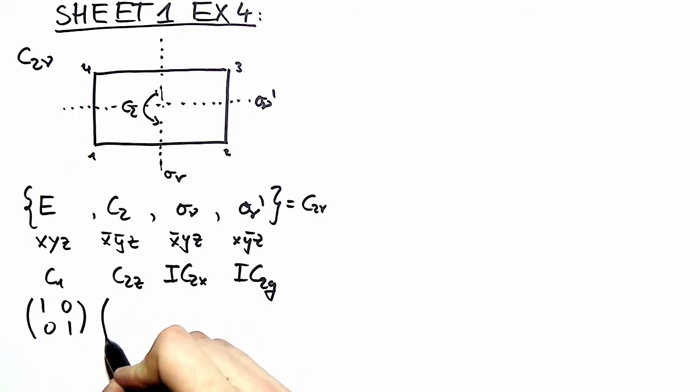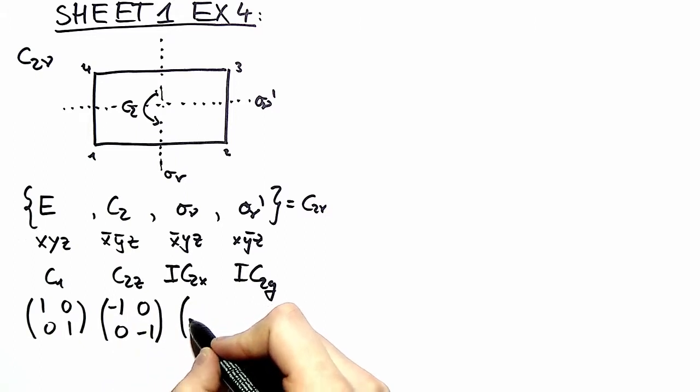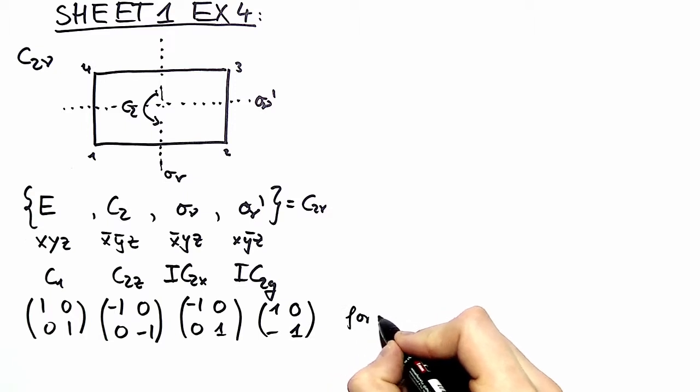For the C2 operation as we can see from over here both coordinates are inverted. One mirror plane inverts the first coordinate, the other mirror plane inverts the second coordinate. And this is for the Cartesian coordinate system.